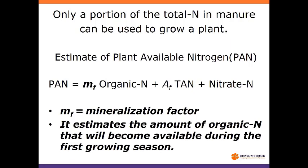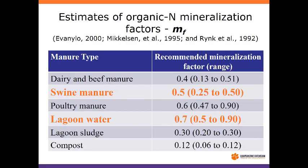The first-year organic N term uses a mineralization factor — we call it M sub F — which estimates how much we'll mineralize out that first growing season. In the South, we don't worry about carryover organic N because our warm climate burns it up; we can't rely on it. For the mineralization factor, the values vary by species. For swine slurry it's about 0.5, and for lagoon water it's 0.7. Poultry and compost are quite different.